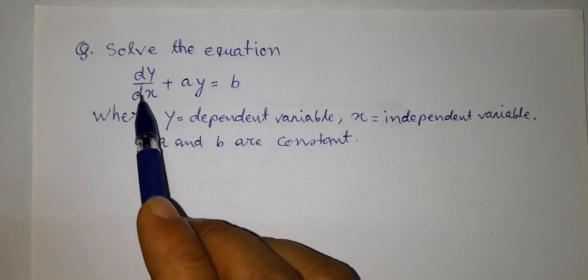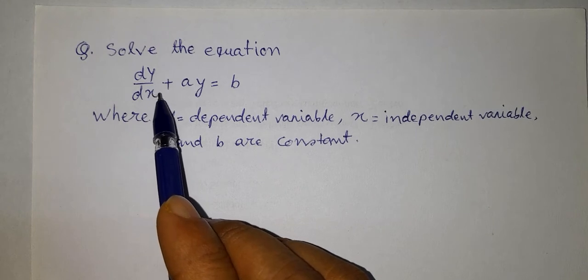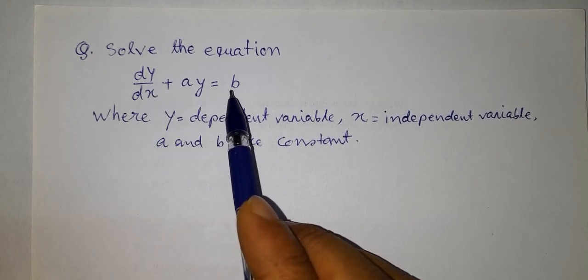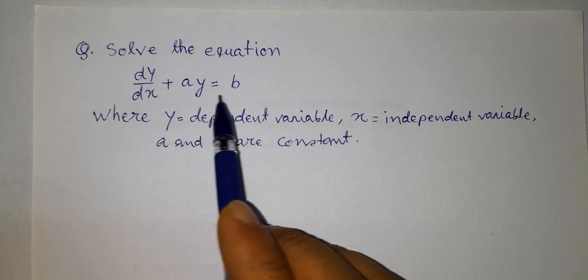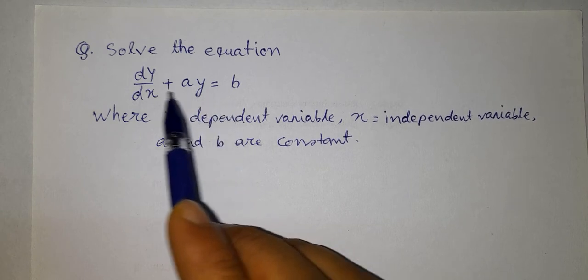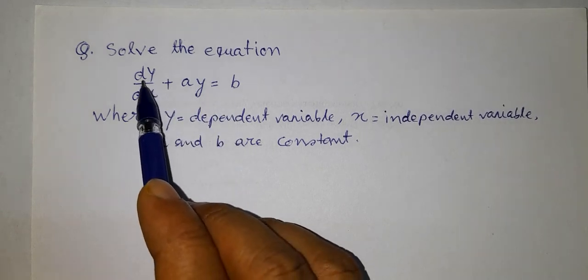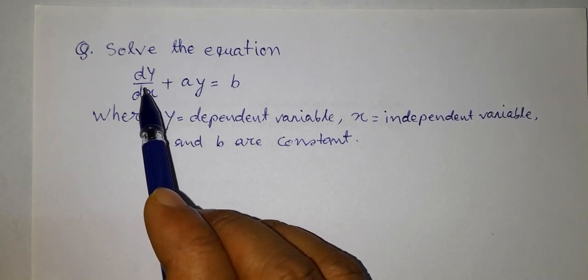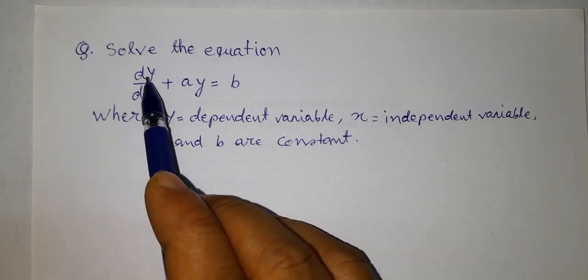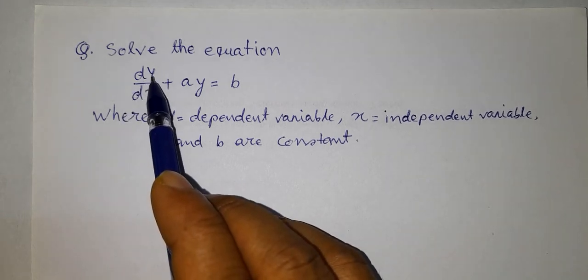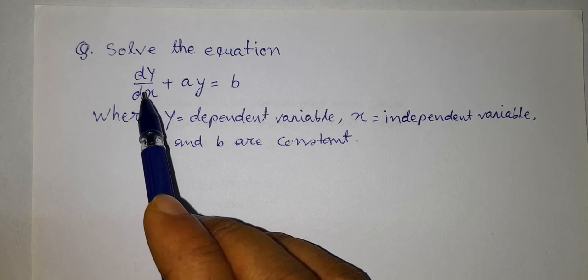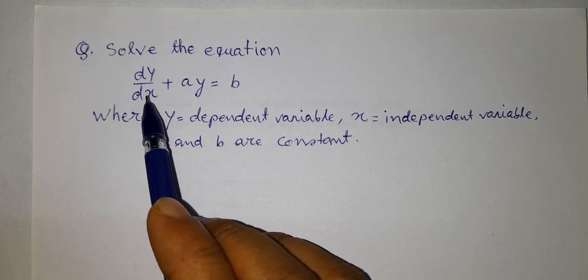This is a first order linear differential equation because this equation involves a first order derivative and the power of this derivative term is 1, so it is a first order linear differential equation.